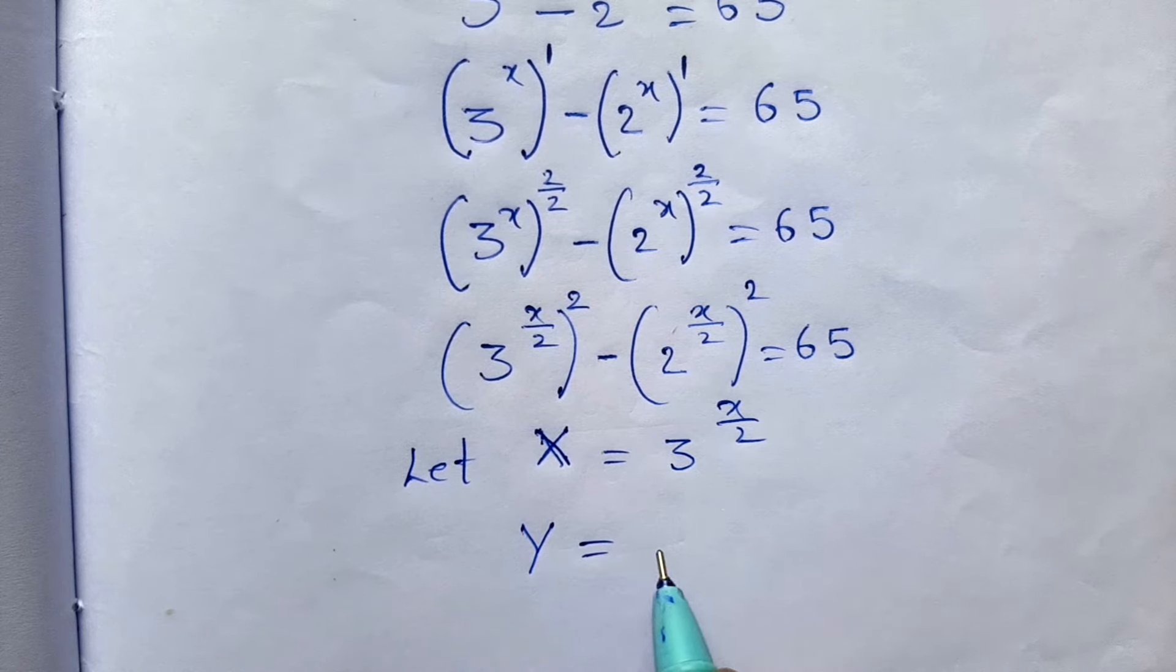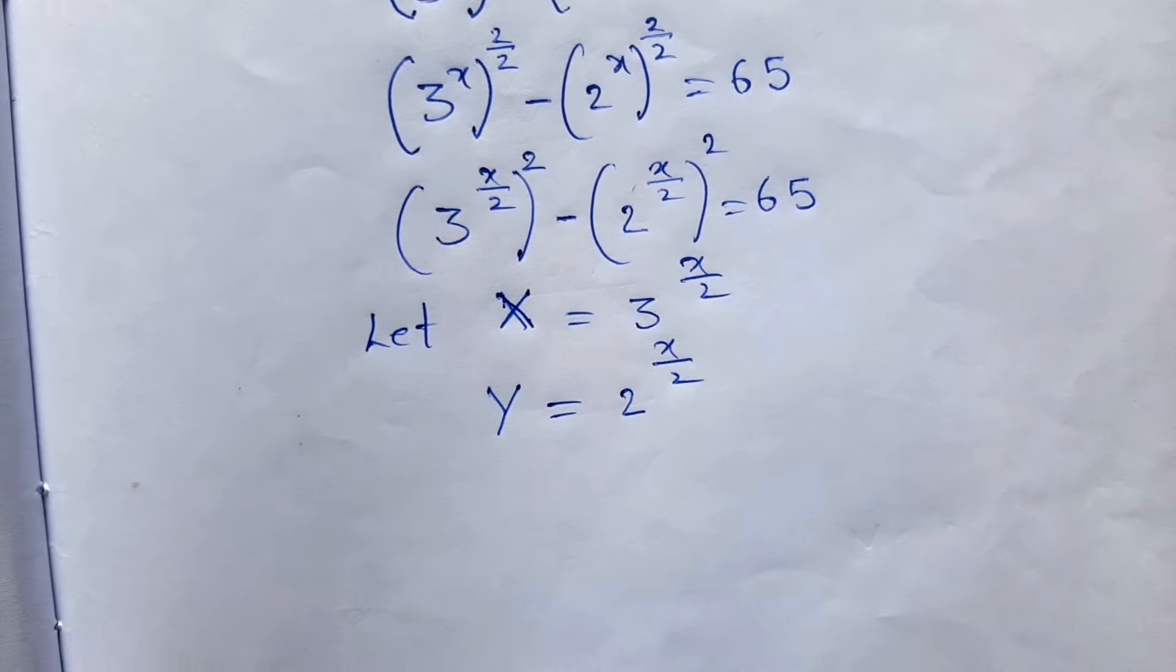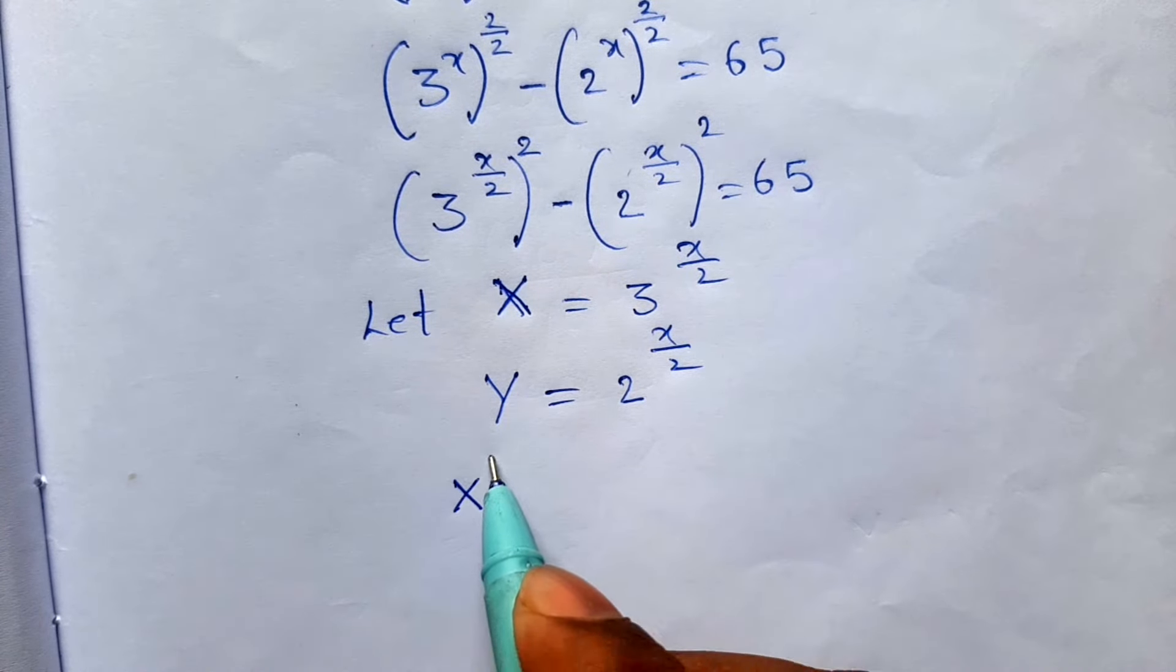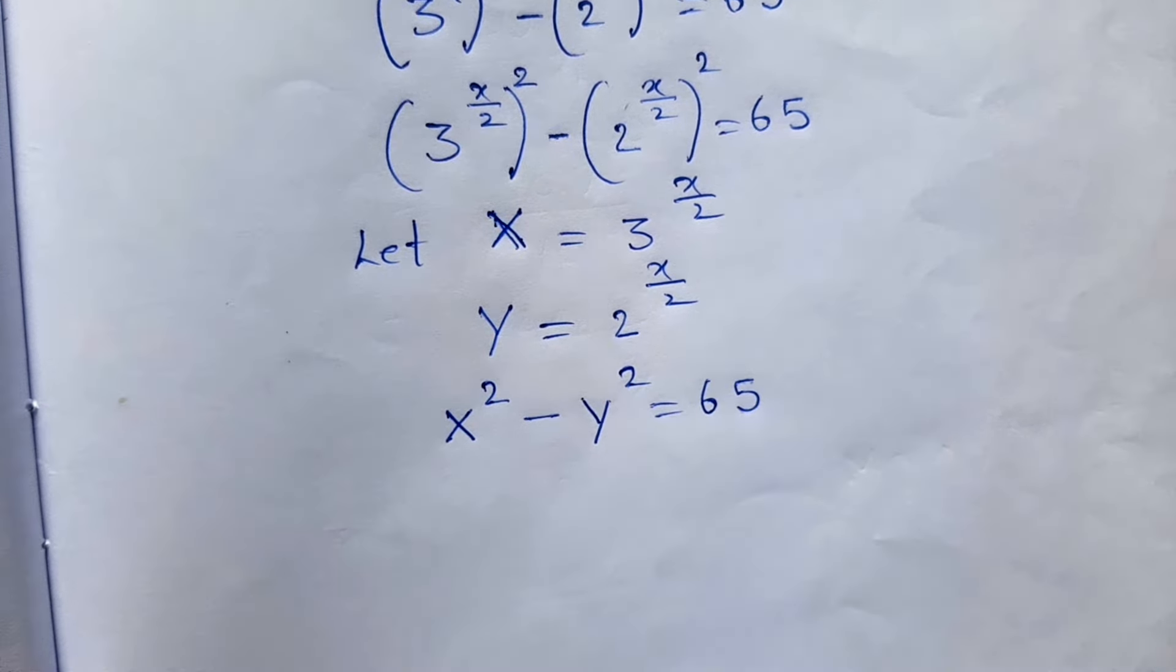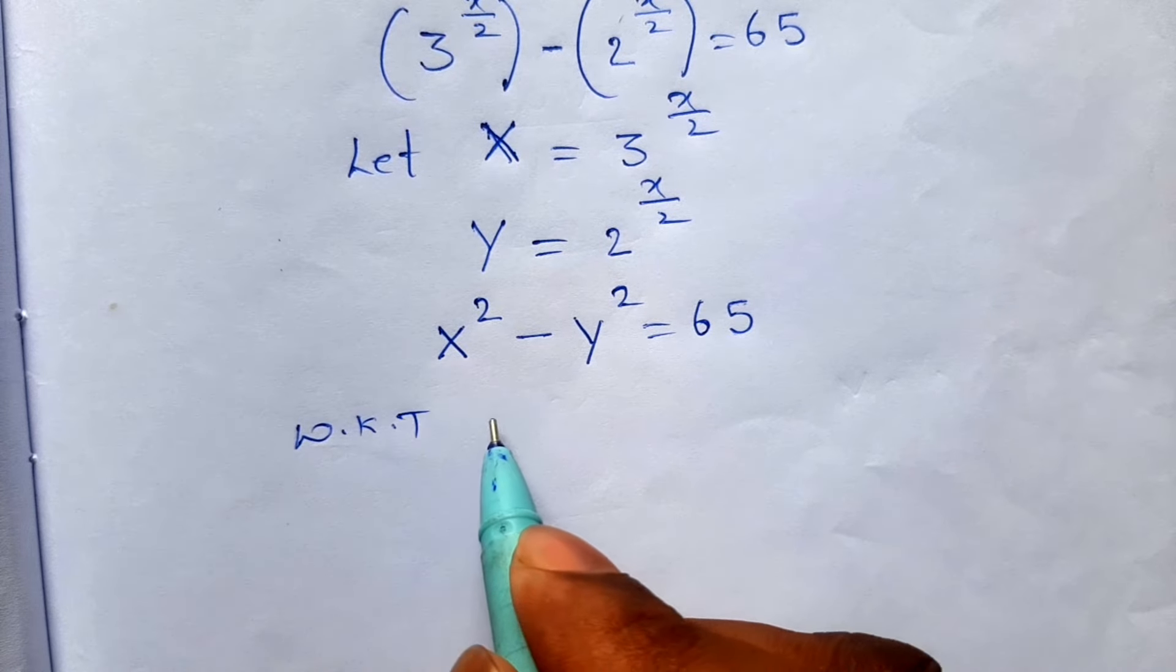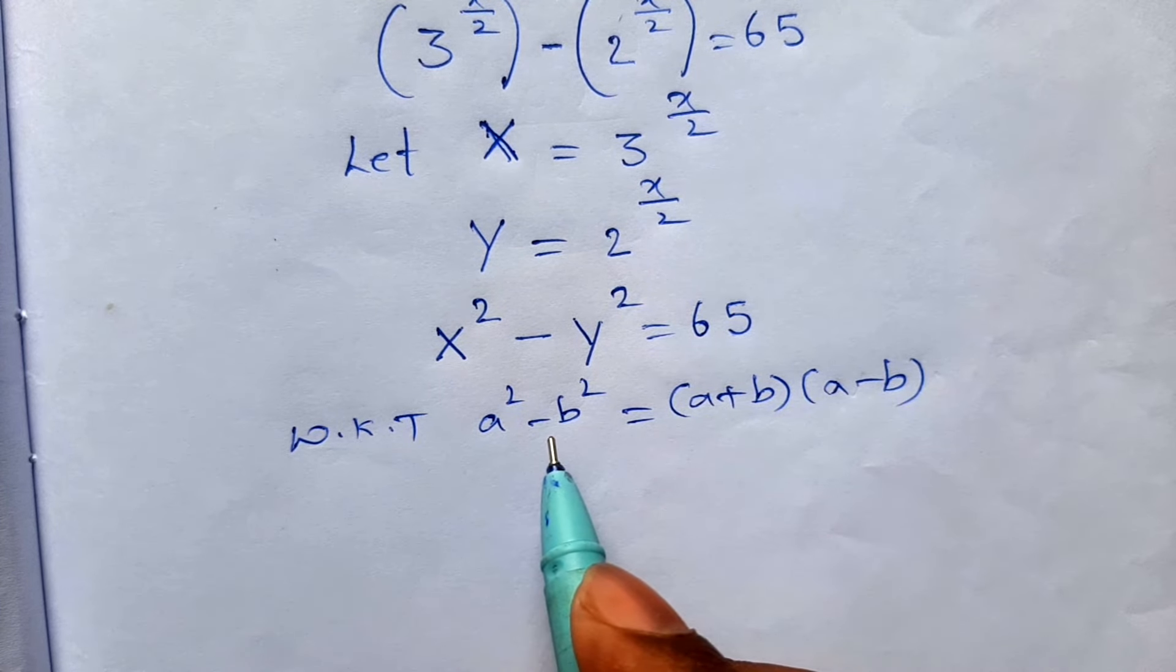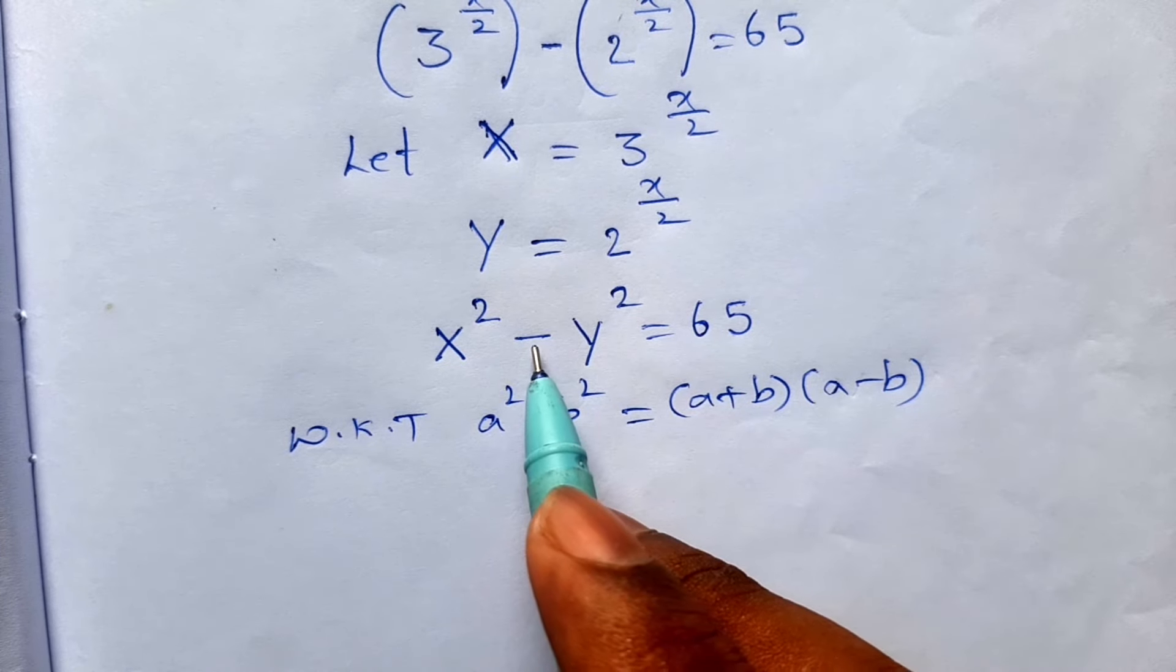Let one value is equal to x and another equal to y. x square minus y square is equal to 65. This one looking like this formula: a square minus b square is equal to a plus b into a minus b. This one now gives a plus b into a minus b.